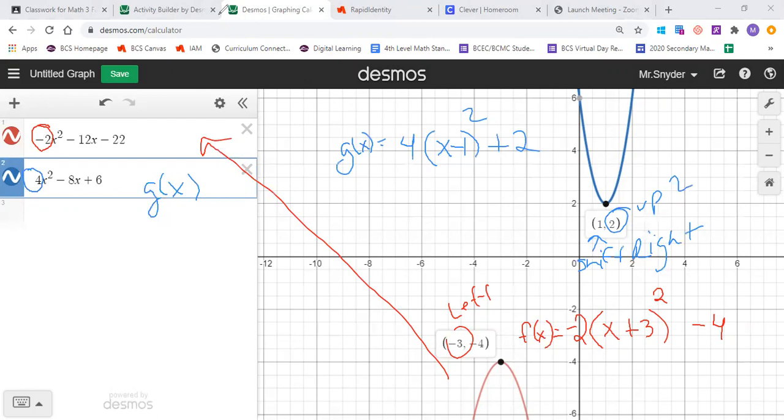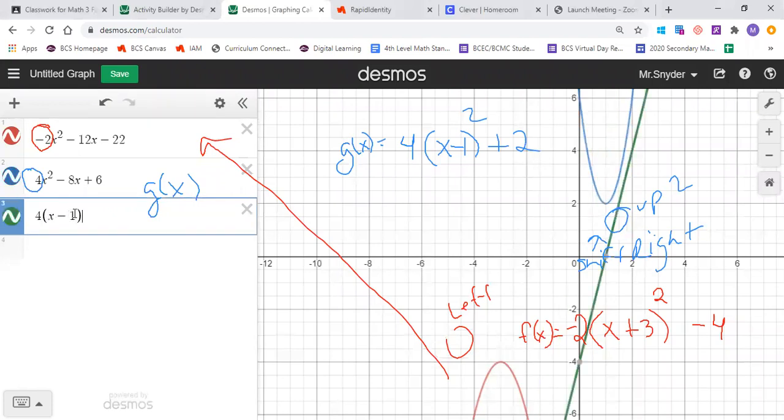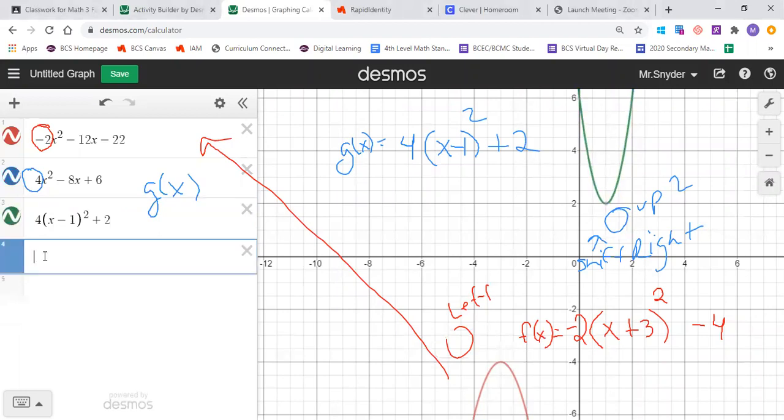Now the one thing I would go ahead and do just to verify these is I want to just plug them in to make sure they're right. So 4 x minus 1 squared plus 2. And notice it overlaps the blue one. And I'll just go ahead and plug in the other one. Negative 2 x plus 3 squared minus 4. And it overlaps. So we have converted from a standard form equation over to a vertex form equation.